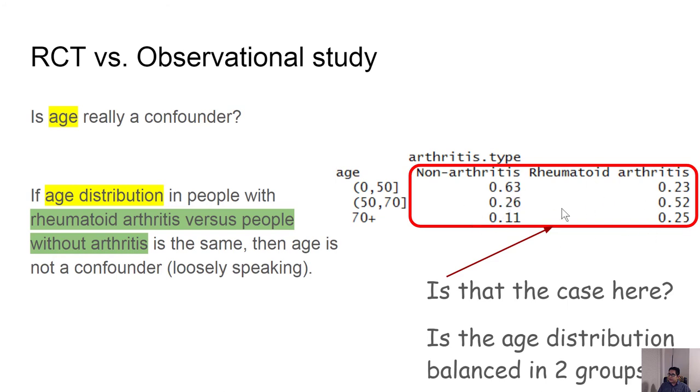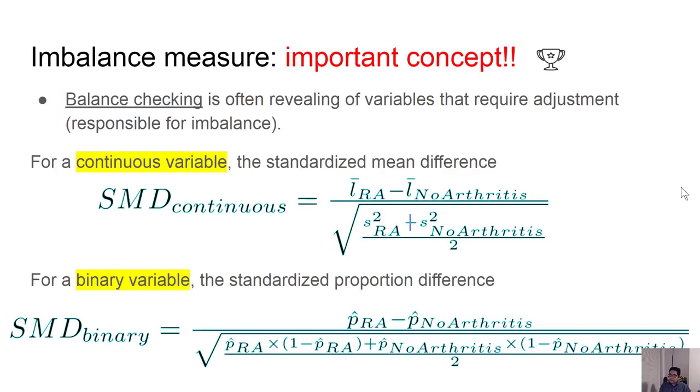Do you think by looking at this table, 63% versus 23%, 26% versus 52%, 11% versus 25%, do you think this looks balanced? 63% and 23% are obviously two different types of numbers, but at which point are you going to say that there is some imbalance there? There is supposed to be some sort of cut point. So in statistics there are some measures.